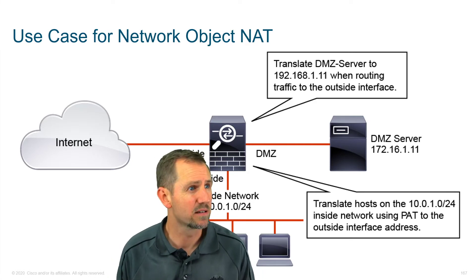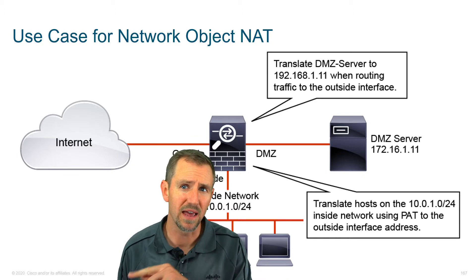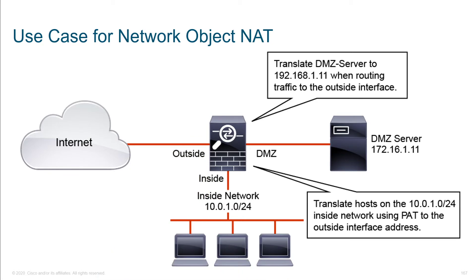Let's take a deeper look at using NAT on the ASA. We'll walk through what it takes to translate the DMZ server to 192.168.1.11 when routing traffic to the outside interface. Its real IP address is currently 172.16.1.11. We also want to translate hosts on the 10.0.1 subnet using PAT. So we've got two different types of translation: dynamic PAT for the internal network users, and a one-to-one NAT for the DMZ server.